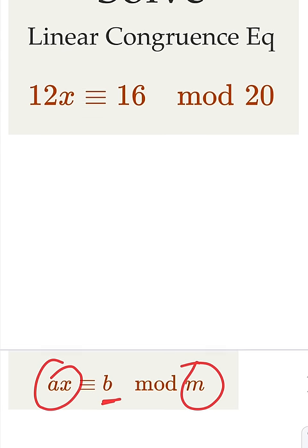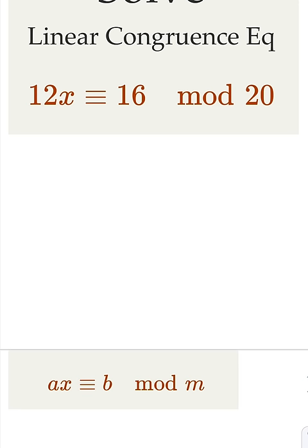Now in our case, the GCD of 12 and 20 is 4, which indeed divides 16. So it has solutions.